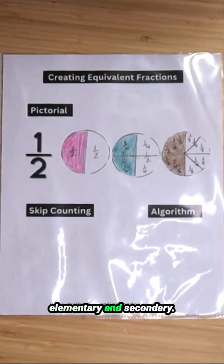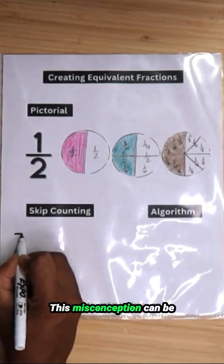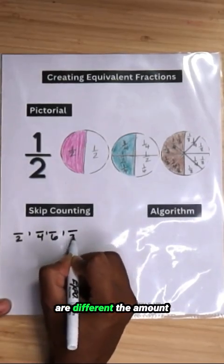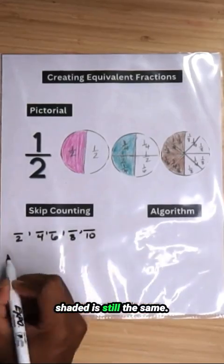For students in upper elementary and secondary, this misconception can be addressed by first using fraction wheels to show that even though the denominators are different, the amount shaded is still the same.